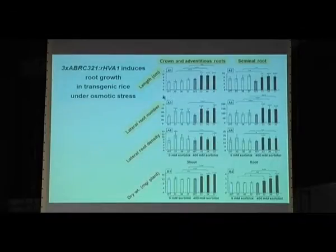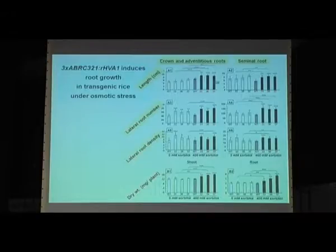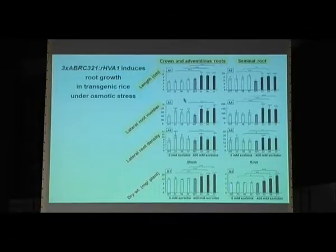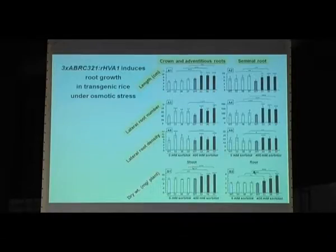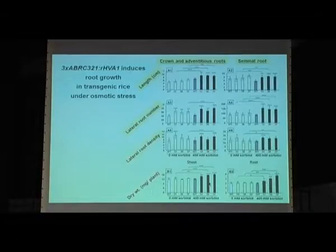Quantification shows that root length, lateral root number, and lateral root density in crown root, adventitious root, and seminal root are all slightly increased in transgenic lines before sorbitol treatment, but significantly increased after treatment. Similar results are observed for linear root, and also for shoot and root biomass — after sorbitol treatment there is always an increase in transgenic lines.